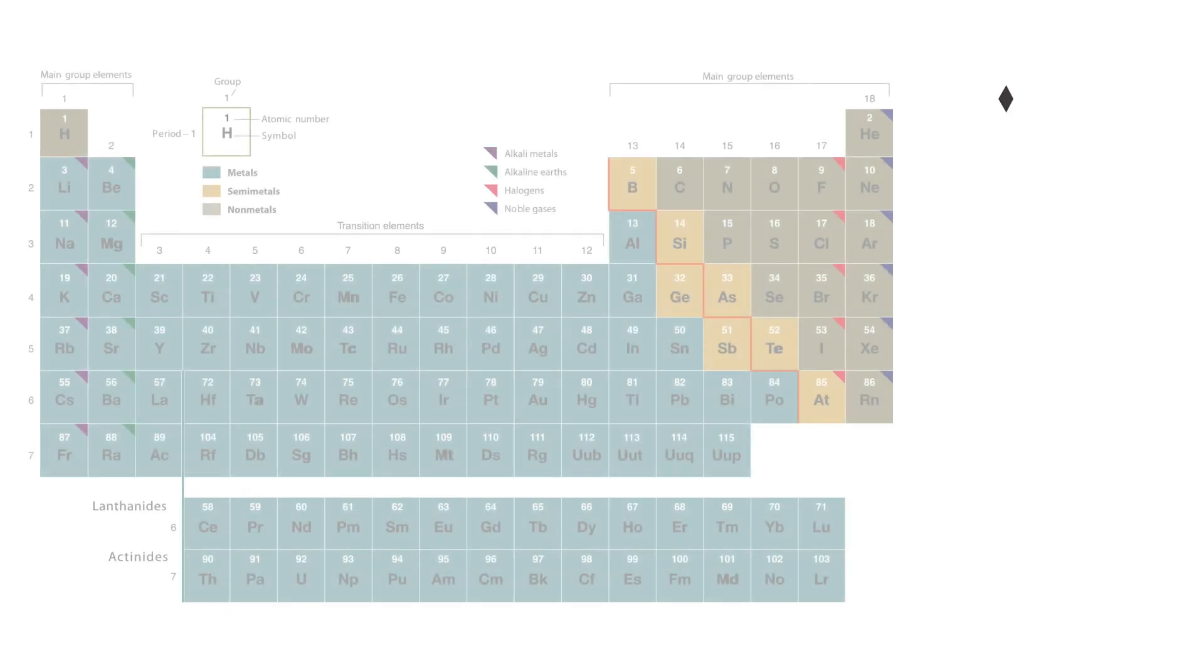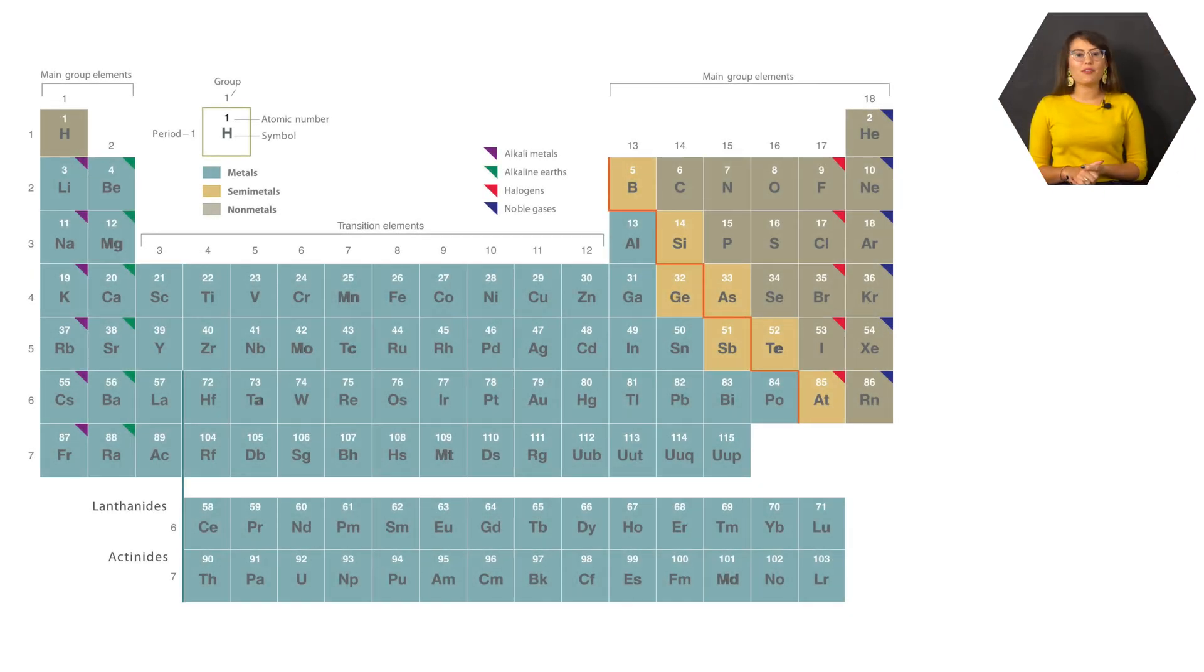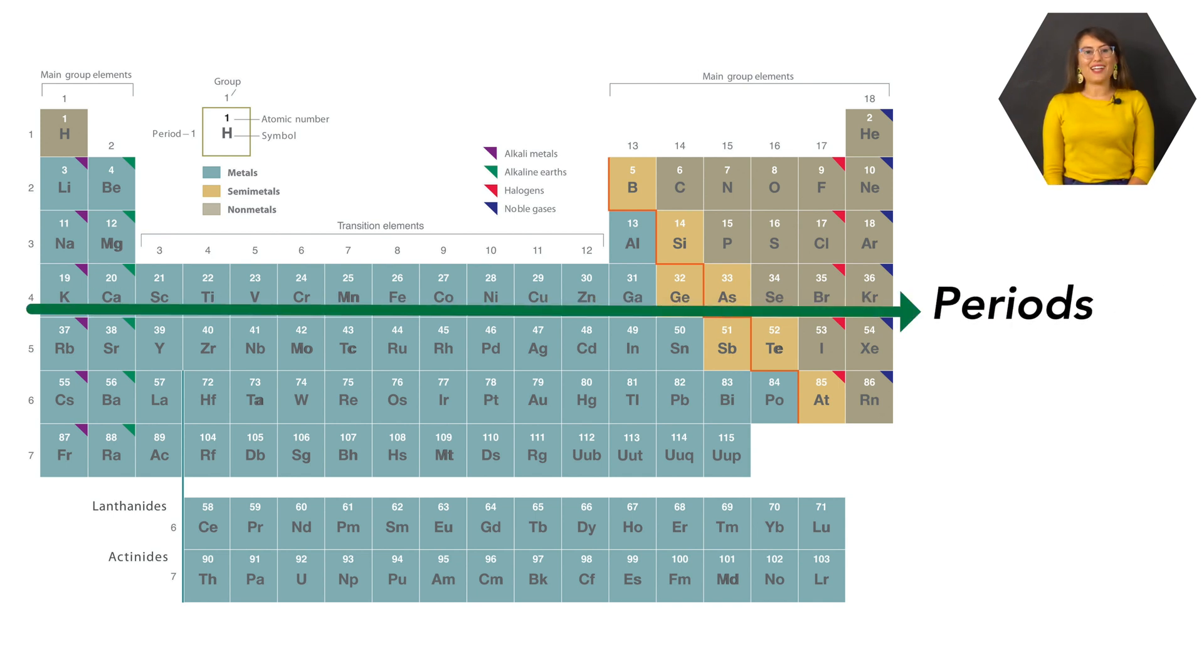Here we can see the modern periodic table. The elements on the periodic table are ordered by atomic number starting with hydrogen, which has an atomic number of 1, and are numbered from left to right.